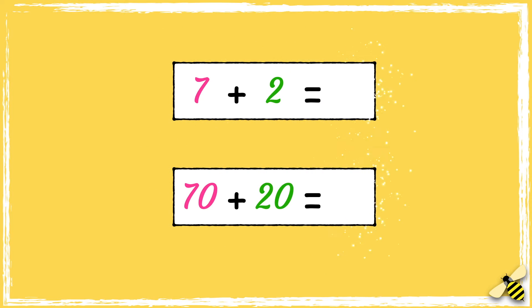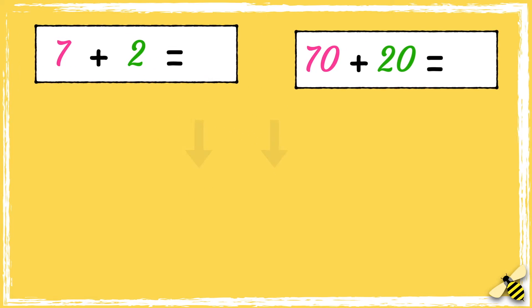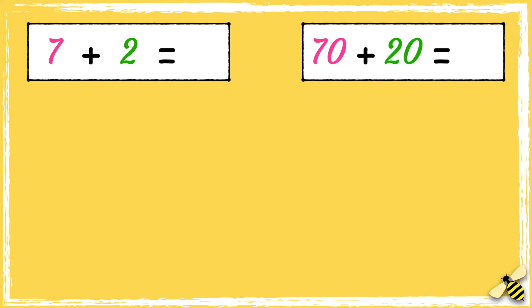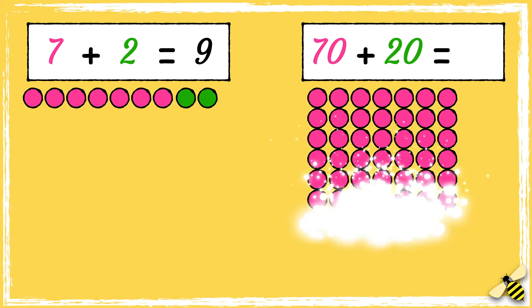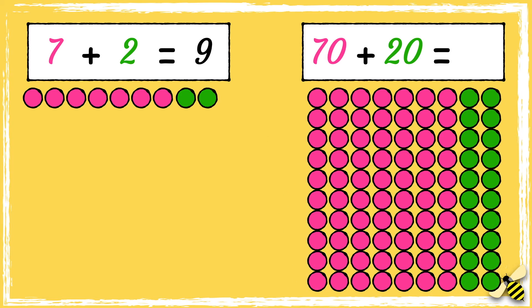Let's have a look at another example. Here are two number sentences. Can you use the answer to the first number sentence to work out the answer to the second number sentence? We know that 7 add 2 equals 9, so 70 add 20 equals 90.